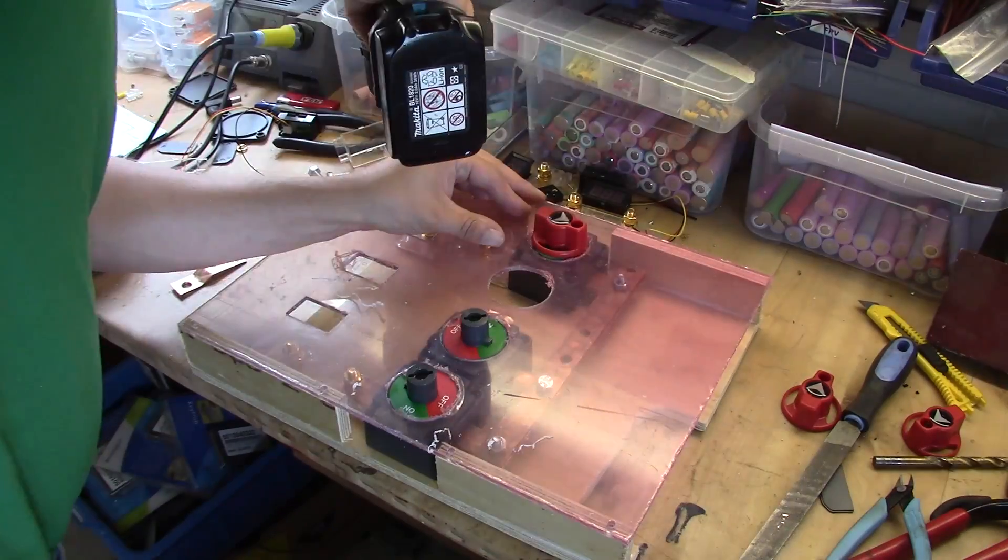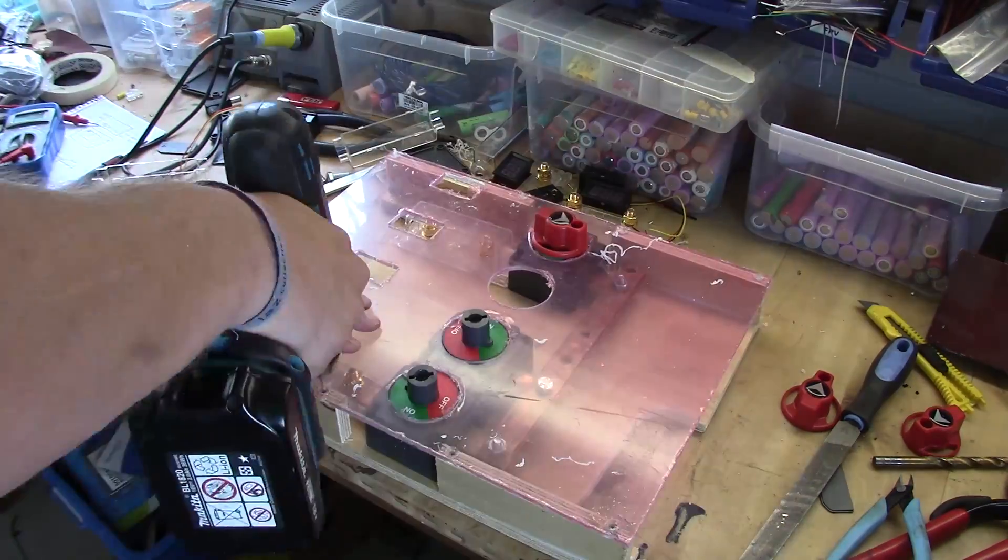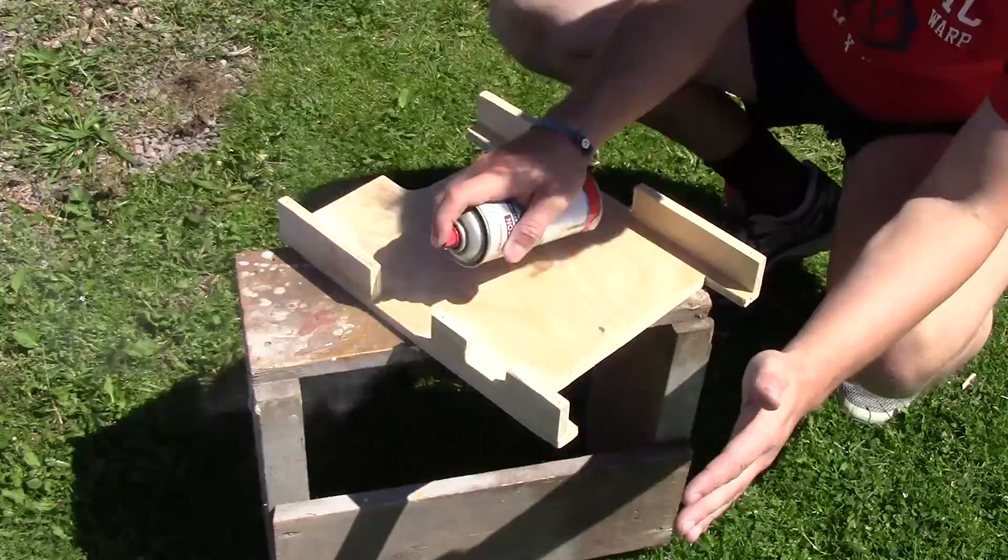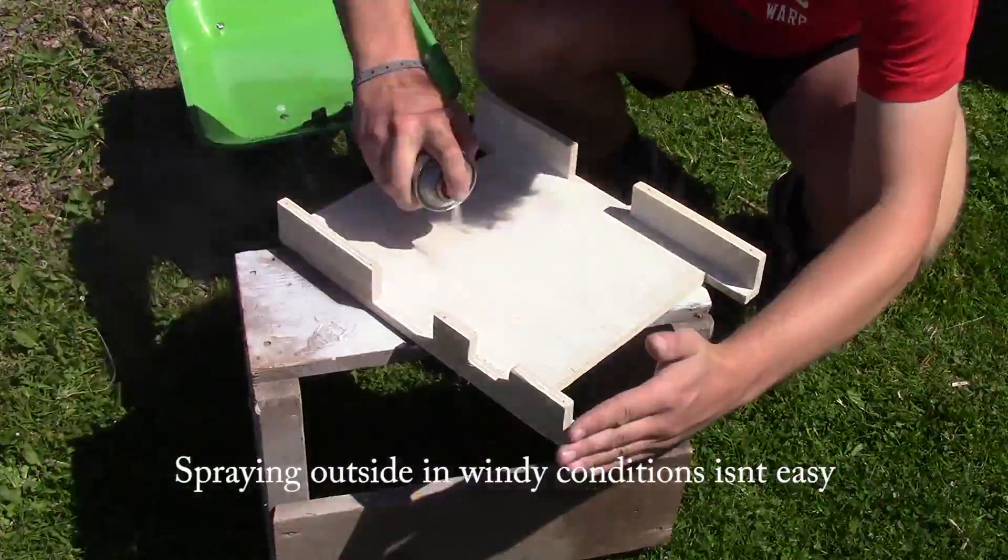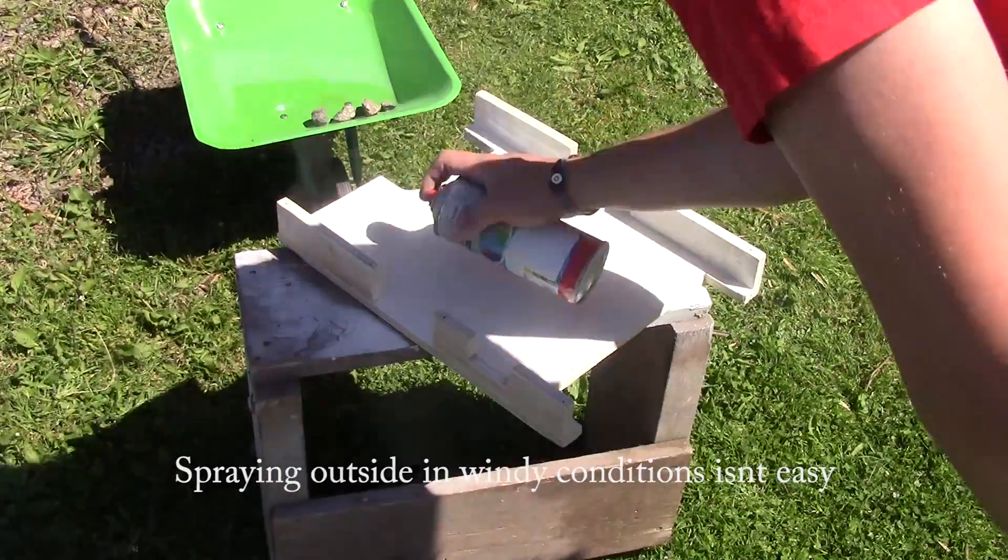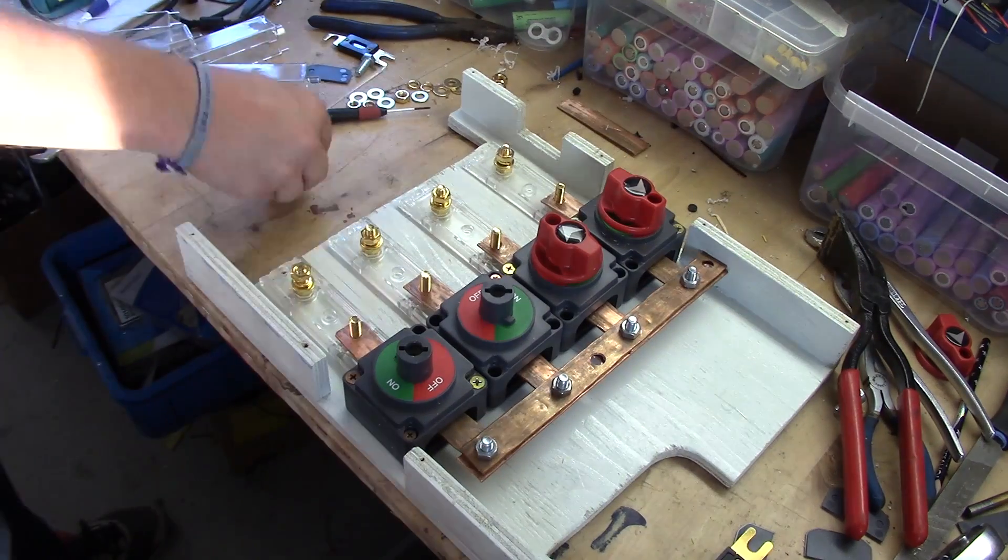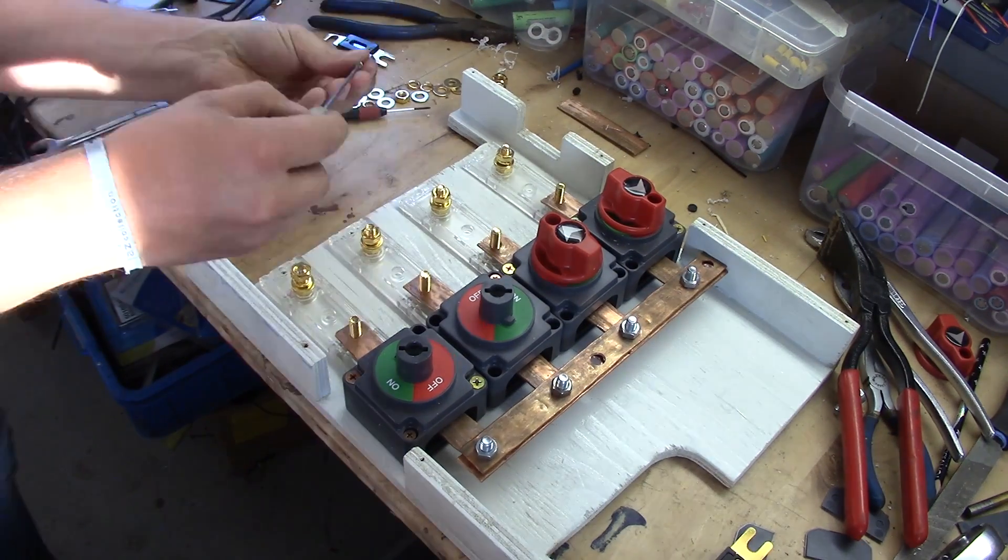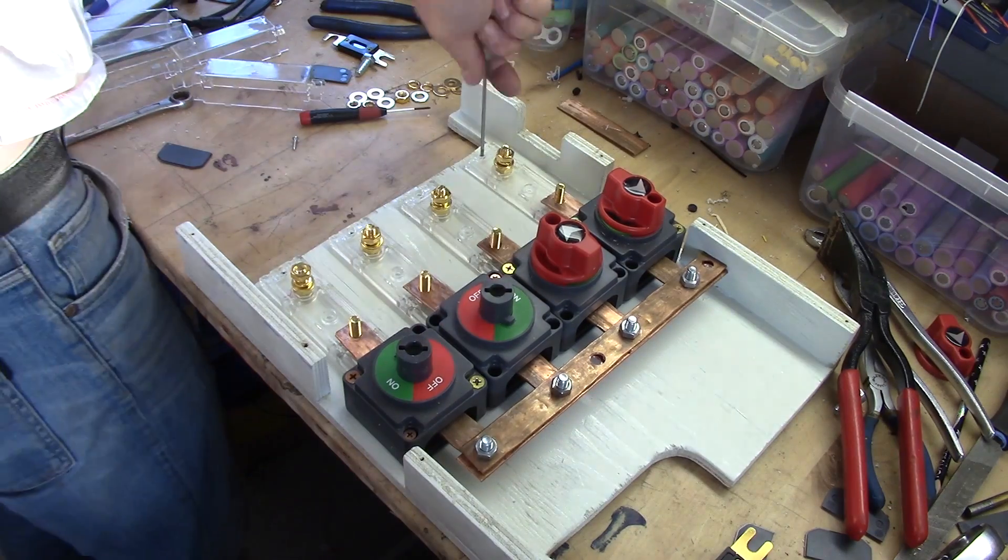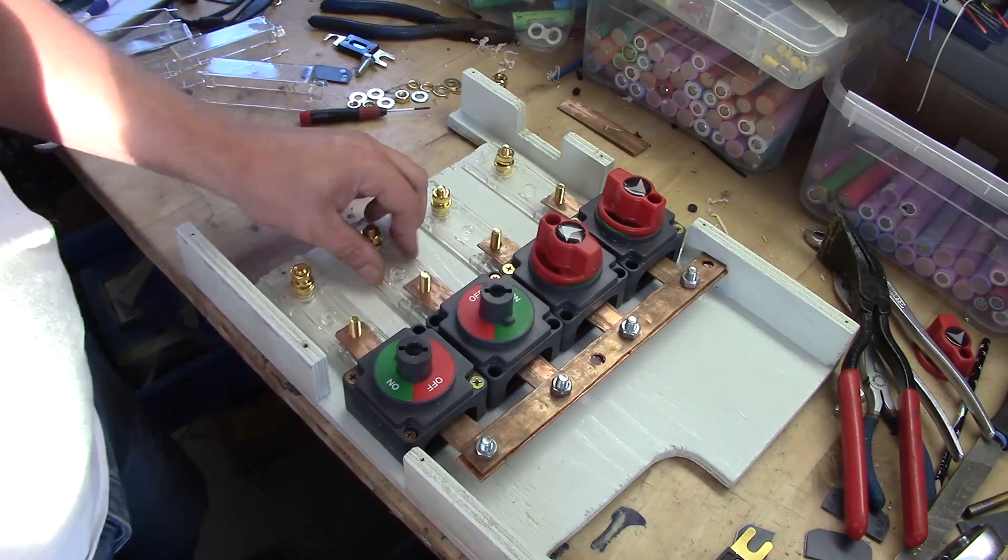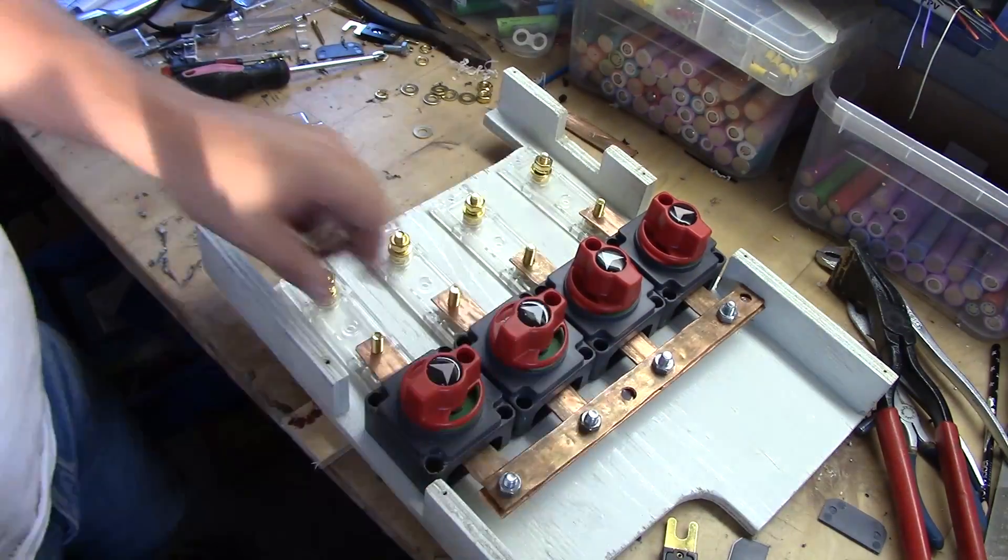Drilling holes in the cover itself and countersinking and then drilling the threads. Attaching the fuse holders and then go back and attach the actual breakers itself. Make sure it still fits and it does.